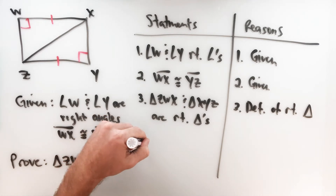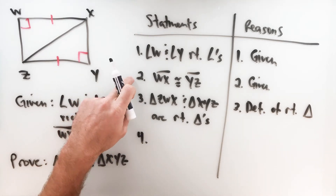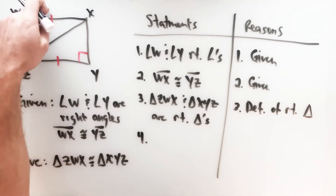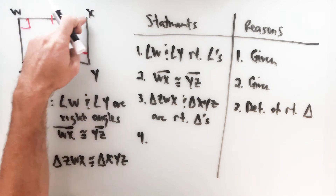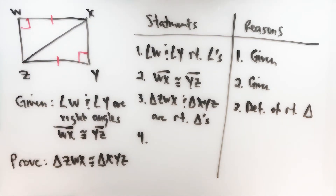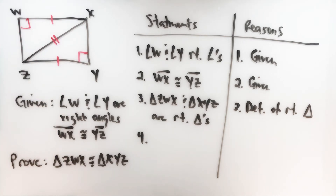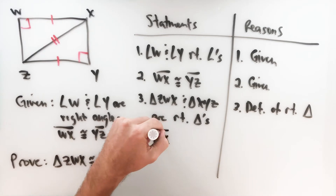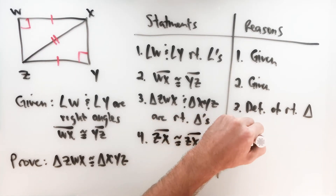That's step one of our three-part criteria. Step two is we have to have a pair of congruent legs — that's right here: WX and YZ are the two legs in these triangles, so we've got that. The third step is congruent hypotenuses. Both triangles share the side down the middle — ZX is the hypotenuse shared by both triangles, so ZX is congruent to ZX by the reflexive property.